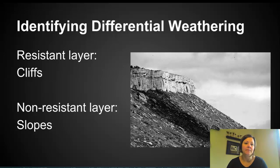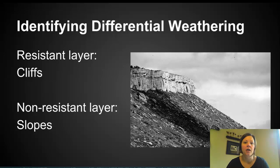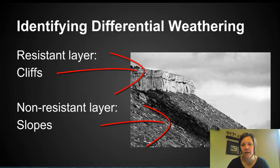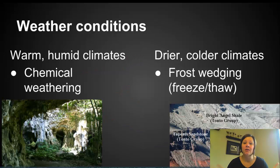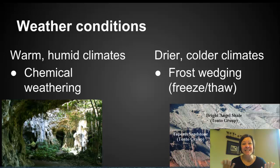These landforms form because the rocks weather and erode at different rates. You'll oftentimes see cliffs, which help us identify our resistant layers — layers that are resistant to the weathering that's occurring — and then rock that's typically non-resistant. The climate is extremely important to help us understand this. We have to know a little bit about the climate in order to understand how it impacts weathering and erosion.